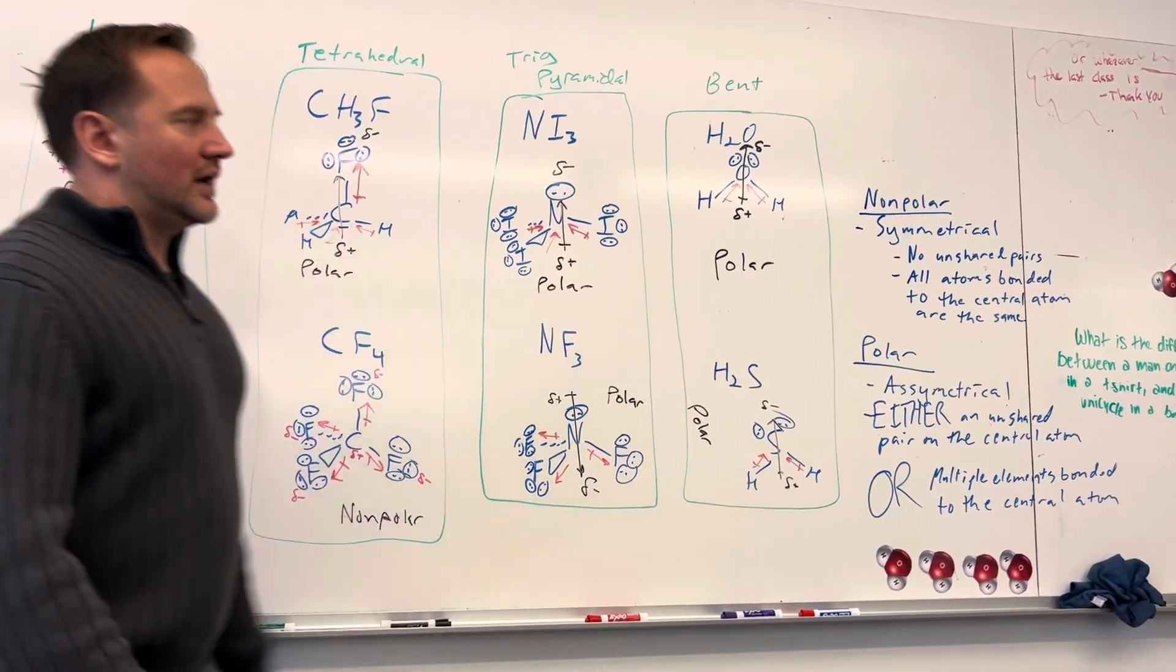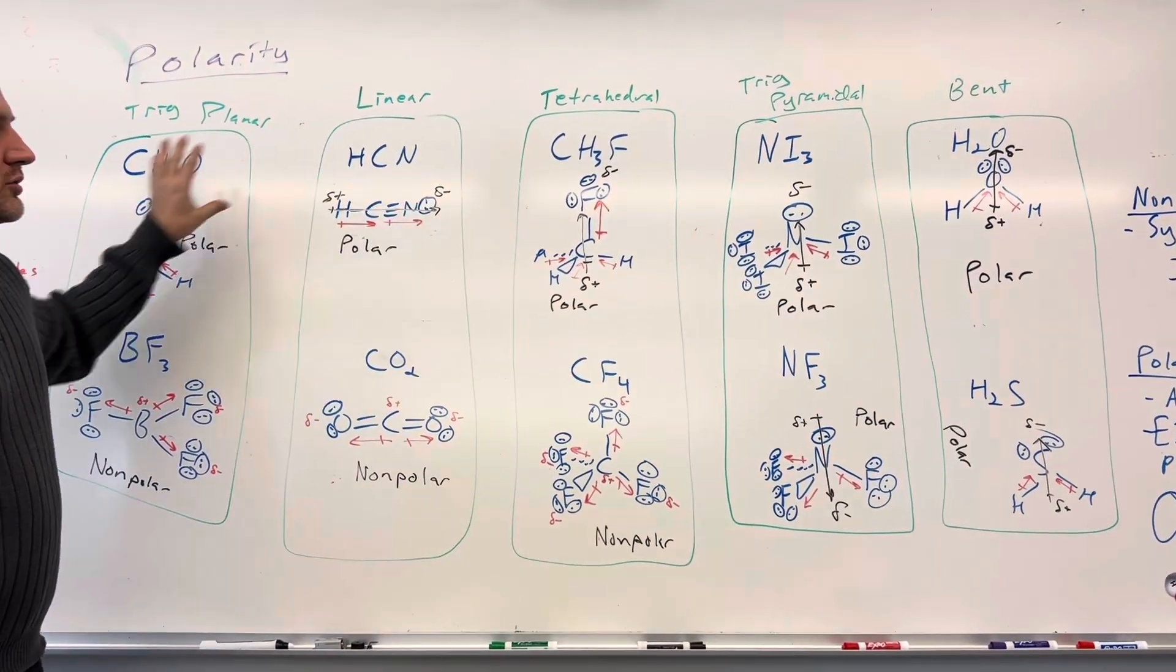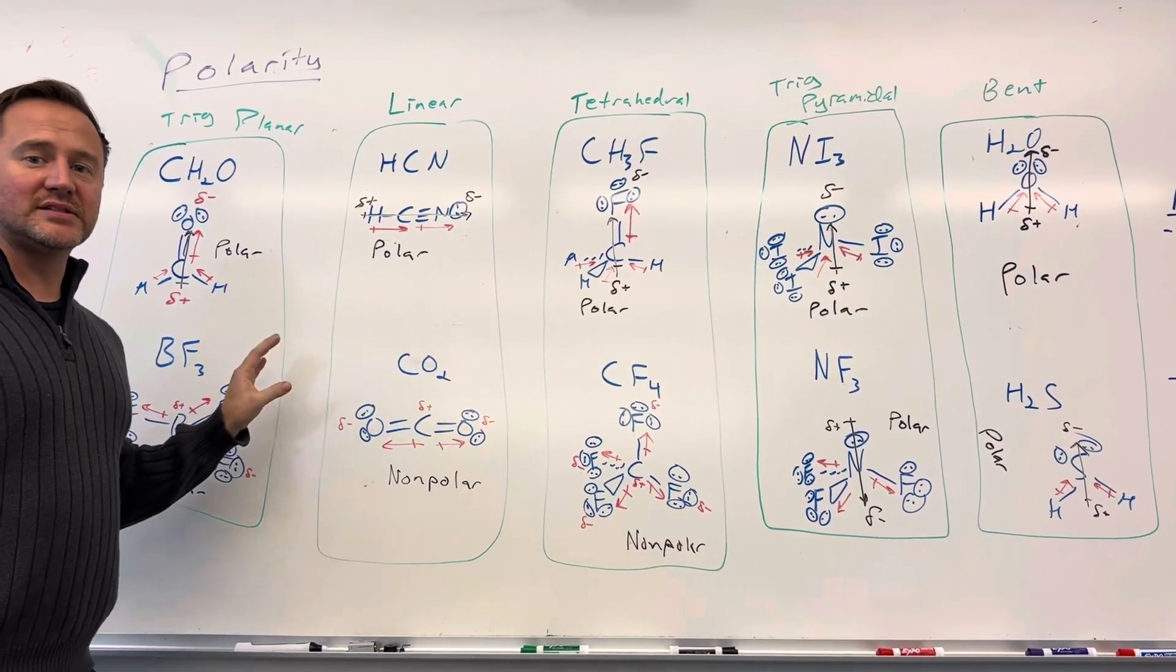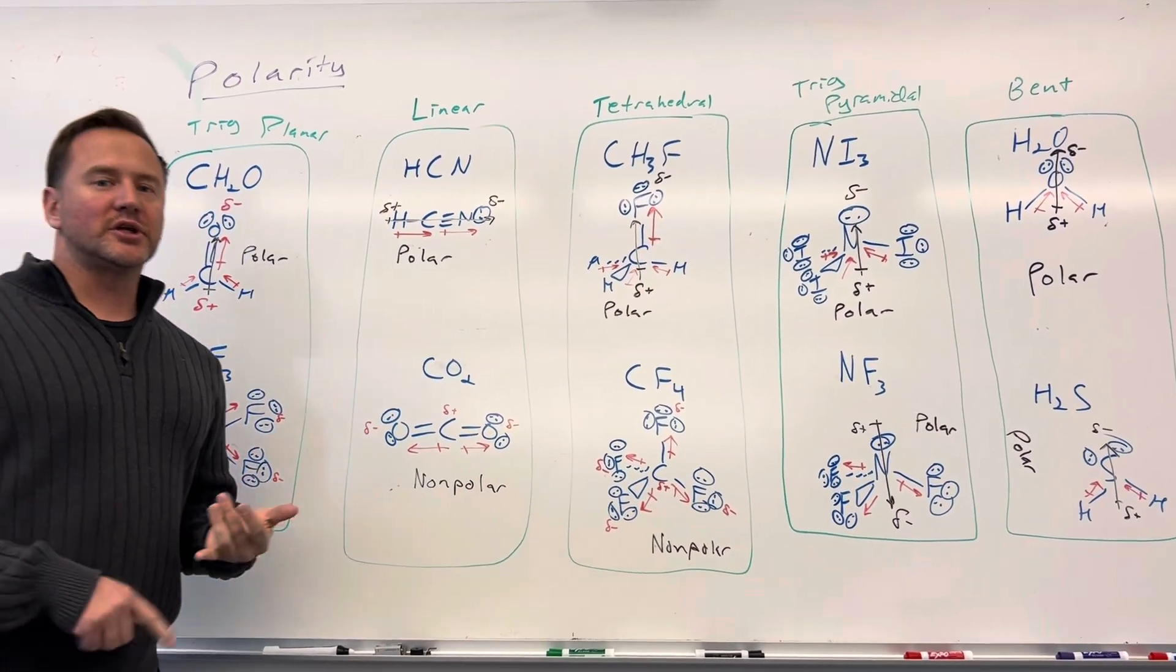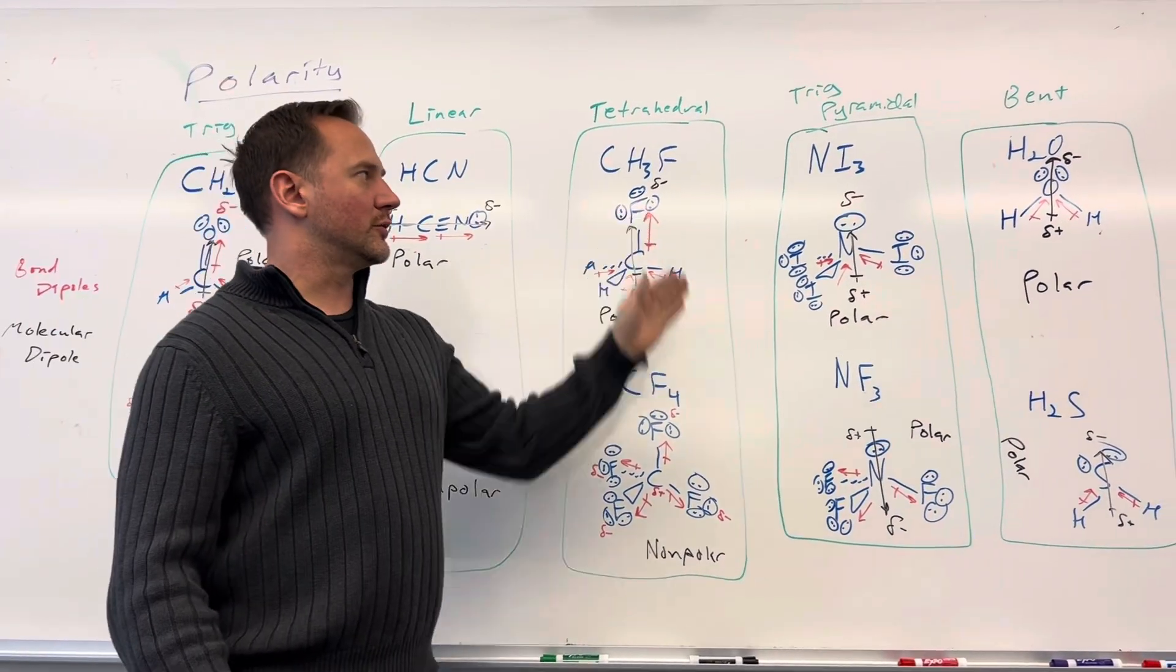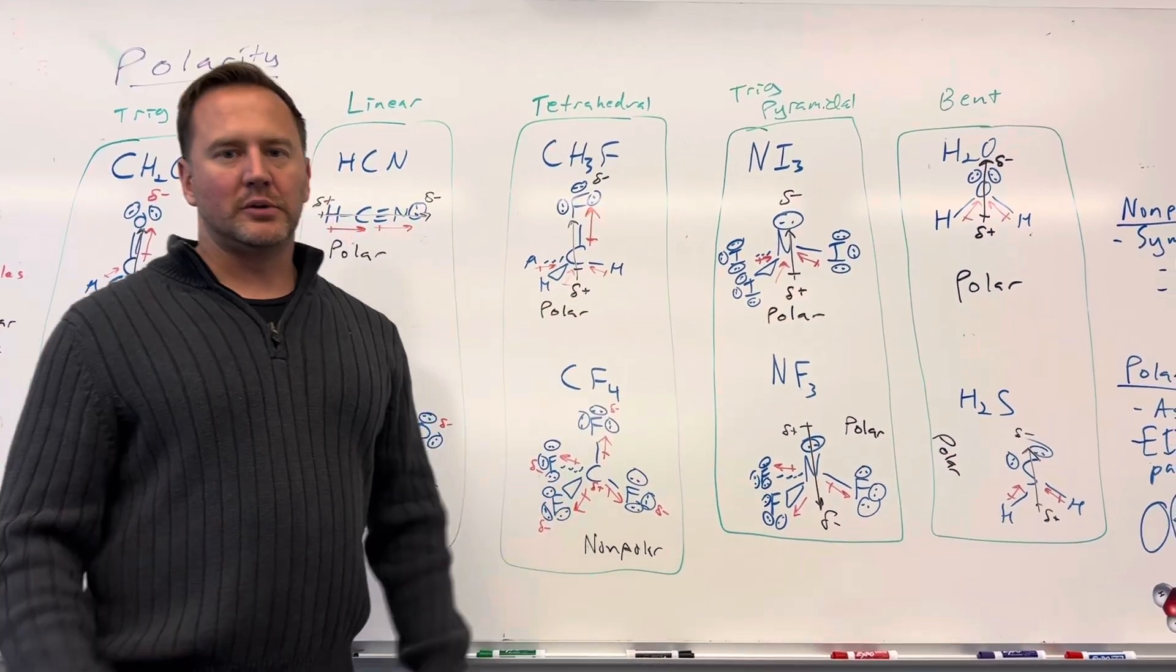And so again, the molecules where you have no unshared pairs of electrons in the central atom can be polar or non-polar depending on the symmetry. But if you have unshared pairs in the central atom, like you do in trigonal pyramidal or bent, it's pretty much always going to be polar.